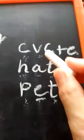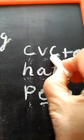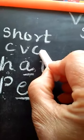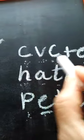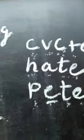This is our first rule of long vowels: C-V-C is short, and C-V-C plus E is long.